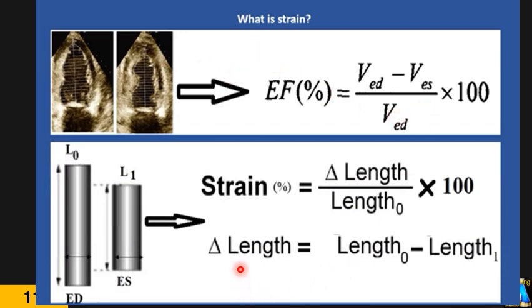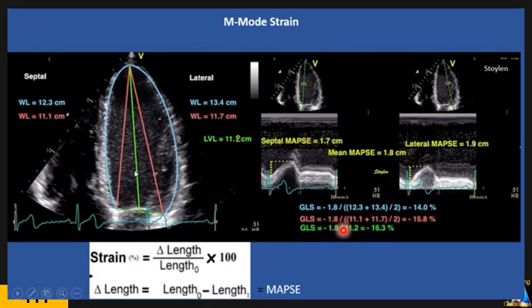The final concept is the same: the percentage of change in length, thickening, circumferential, or rotation — all measured the same way. With Simpson's method we measure volume; with strain, for longitudinal, we measure length. Now, how can we measure these changes? For longitudinal strain, we have three techniques.